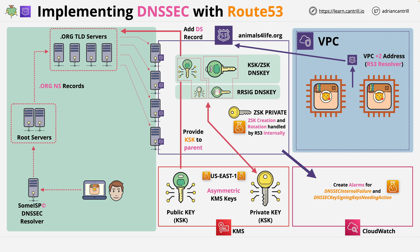You might also want to consider enabling DNSSEC validation for VPCs. This means that for any DNSSEC-enabled zones, if any records fail validation due to a mismatched signature or not being trusted, they won't be returned. This doesn't impact non-DNSSEC-enabled zones, which will always return results.